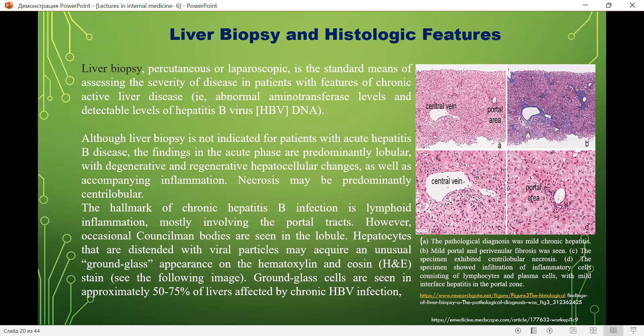On the picture: A — the pathological diagnosis was mild chronic hepatitis B; B — mild portal and perivenous fibrosis; C — the specimen exhibited central lobular necrosis; D — the specimen showed infiltration of inflammatory cells consisting of lymphocytes and plasma cells, with mild interface hepatitis in the portal zone.